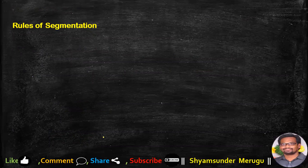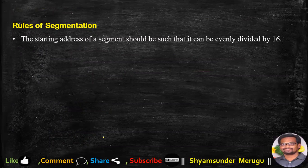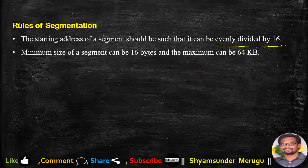Can we go for segmentations as we wish? Certainly not. There are rules which must be satisfied for segmentation. The first rule is that the starting address of a segment must be evenly divisible by 16. The minimum size of a segment can be 16 bytes and the maximum can be 64 KB. Both conditions must be satisfied.